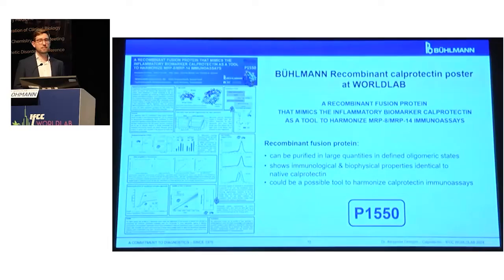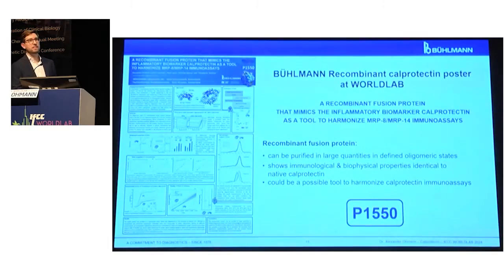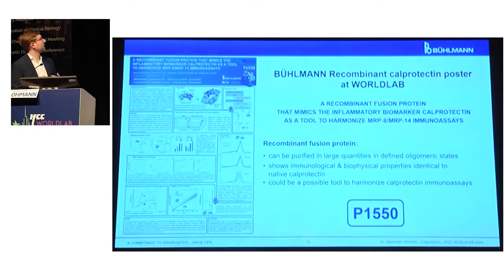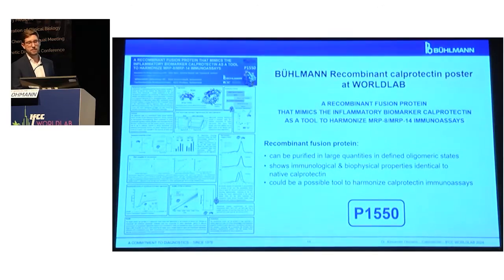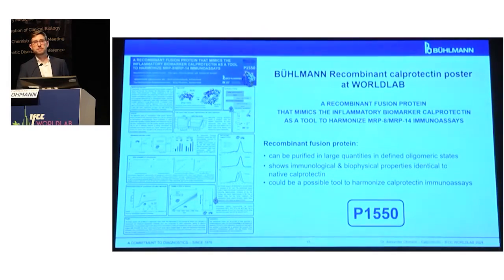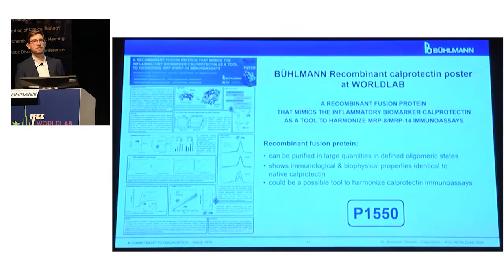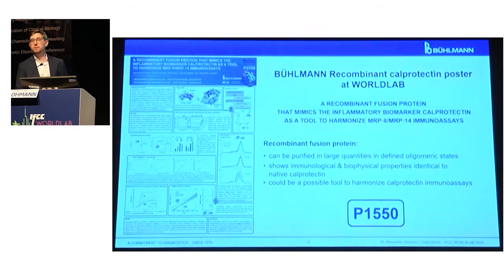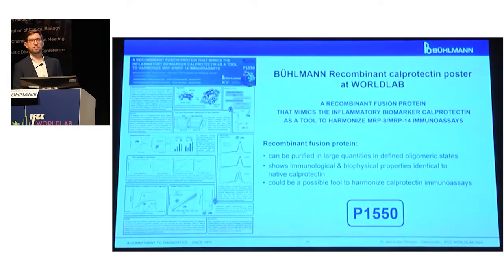In addition, we also developed a recombinant calprotectin — a fusion protein — and we have a poster here at World Lab. It can be purified in large quantities in defined oligomeric states, and it shows immunological and biophysical properties identical to native calprotectin. Our idea is that this could be a possible tool to harmonize calprotectin immunoassays. I'm happy to talk more about this after the session, or you can have a look at the poster here at World Lab.